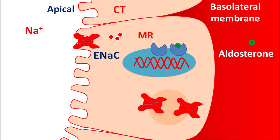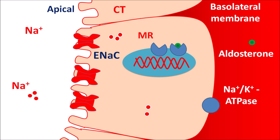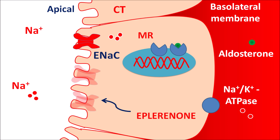These newly synthesized sodium channels are expressed on the epithelium — this is how aldosterone increases the expression of epithelial sodium channels. Sodium ions then enter through these channels and are transported into systemic circulation by the sodium-potassium ATPase pump on the basolateral membrane, so sodium is absorbed in exchange for potassium. Eplerinone blocks these epithelial sodium channels so that sodium is not reabsorbed; instead it is excreted. In this way, eplerinone increases sodium excretion.